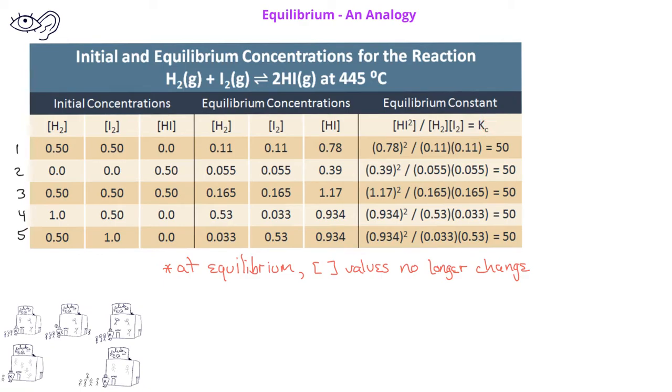In the first experiment, we have 0.5 molar concentrations of both the hydrogen and iodine, and just as in the previous graph we've seen, we're assuming we have no hydrogen iodide to start. Once we reach equilibrium, the hydrogen and the iodine concentrations have decreased to 0.11 molar, whereas the hydrogen iodide concentration has increased to 0.78 molar. When we calculate the equilibrium constant, we find that it has a value of 50.